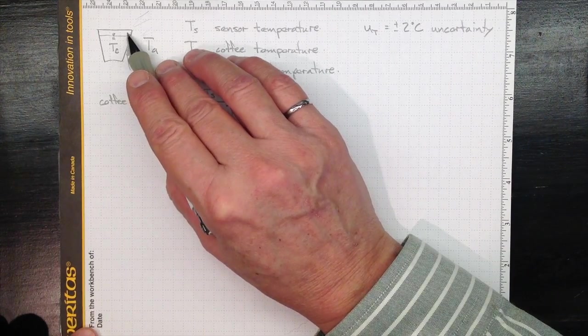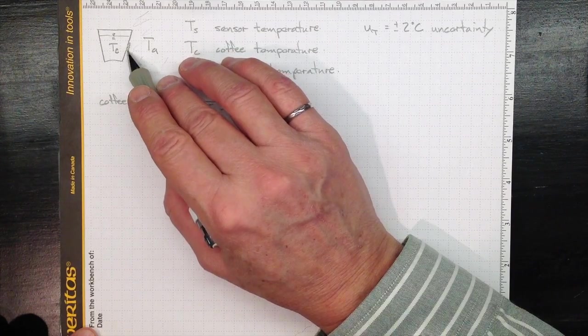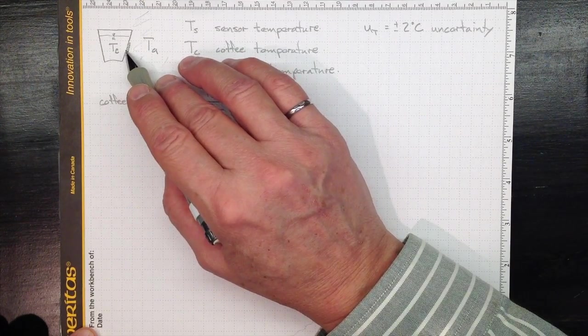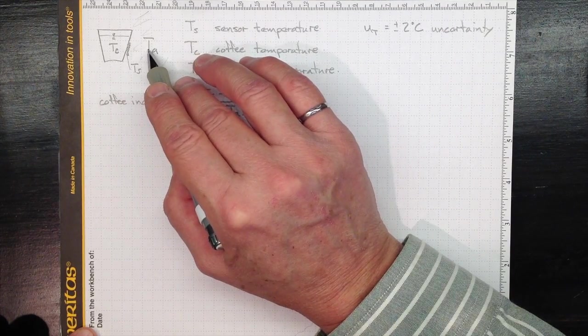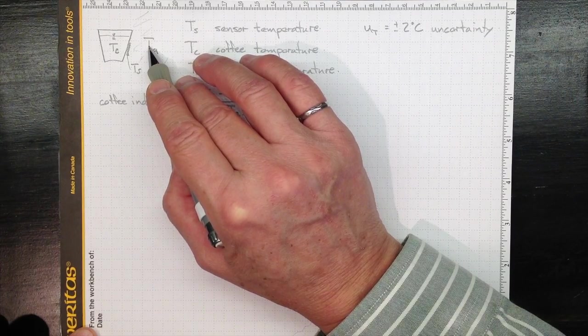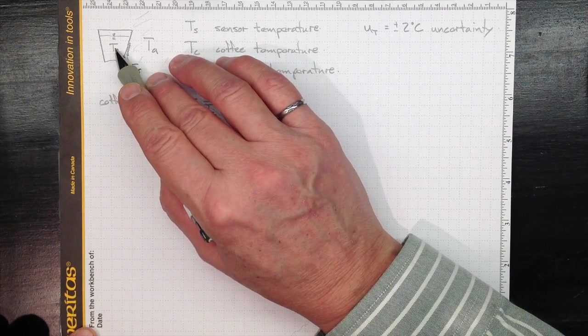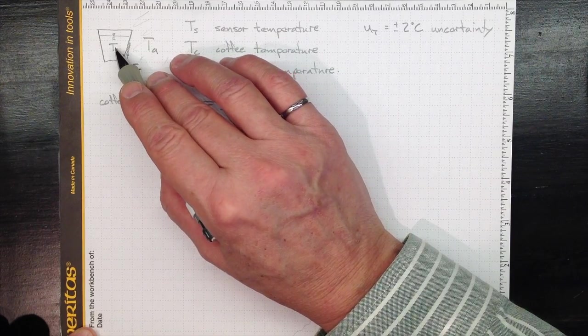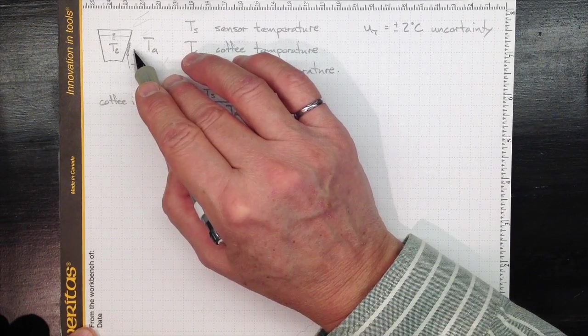Now depending on the configuration of the cup and how well insulated the mounting is for the sensor, the sensor temperature will be somewhere in between the coffee temperature and the ambient temperature when things reach steady state. If we want a good measurement of the coffee temperature, a good estimate, then we'd like this to be as close to the coffee temperature as possible.